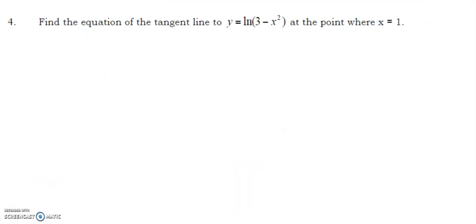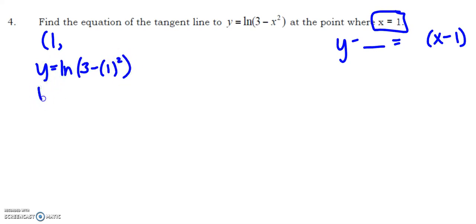Problem four: find the equation of the tangent line. The equation of a tangent line needs a point and a slope, so I'm going to start by writing y minus something equals a slope times x. I know the point is (1, ln 2) because y equals the natural log of (3-1)² which means y equals natural log of 2. I'm not going to get a calculator for my quiz so I might as well start practicing with that.